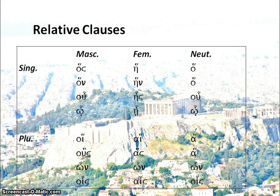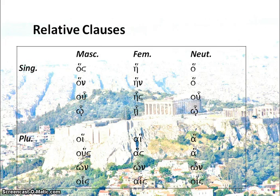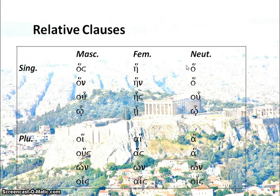There are a couple of bits to watch out for. Hē in the feminine nominative singular, hoi in the masculine nominative plural, and hai in the feminine nominative plural are all identical to the equivalent parts of the definite article. How do we tell the difference? Context will give us a big clue, but more importantly and more easily, the relative pronoun will always have an accent — so you can always tell you've got the relative pronoun by the fact that it has an accent. Also, in the genitive plural, hōn could be confused with the present active participle of eimi — own — so notice the rough breathing rather than smooth.